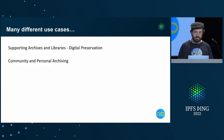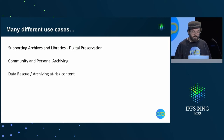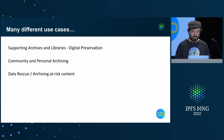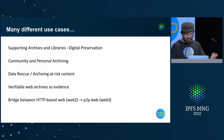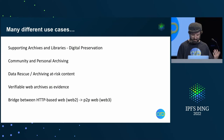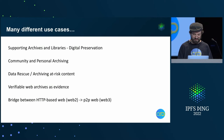Also supporting community and personal archiving, including allowing individuals to archive their own content and allowing communities to archive shared content online that's important to them. Data rescue and archiving at-risk content — anything that might be threatened by government censorship, war, or just link rot for a variety of reasons. Also supporting verifiable web archives used as evidence, which is becoming a more important use case. And bridging between the current web — web two — and the next generation of the web, whether it's D-web, web three, or P2P web.